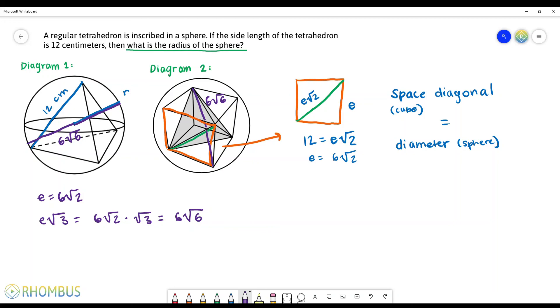Now since we have the diameter of our sphere, all we need to do is divide that by two to figure out the radius of our sphere. And that will give us our final answer. So 6√6 divided by 2 gives us our final answer, 3√6.